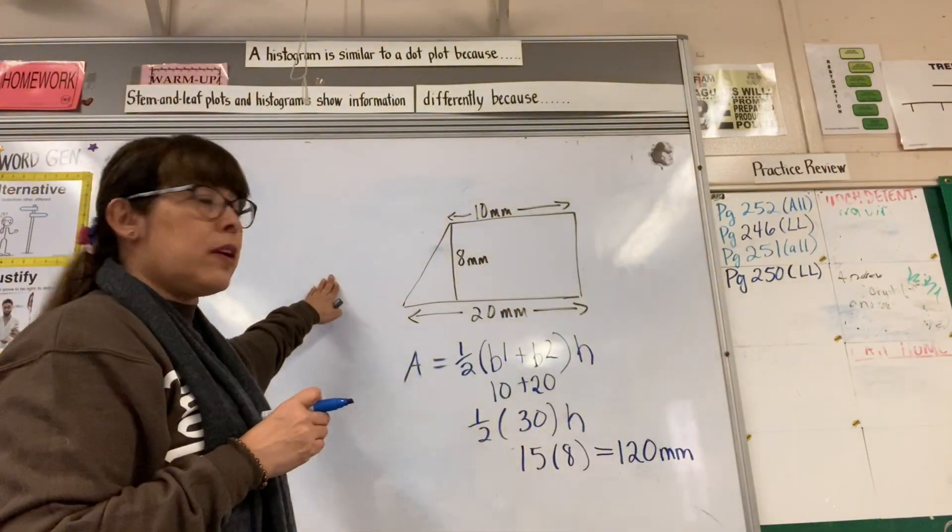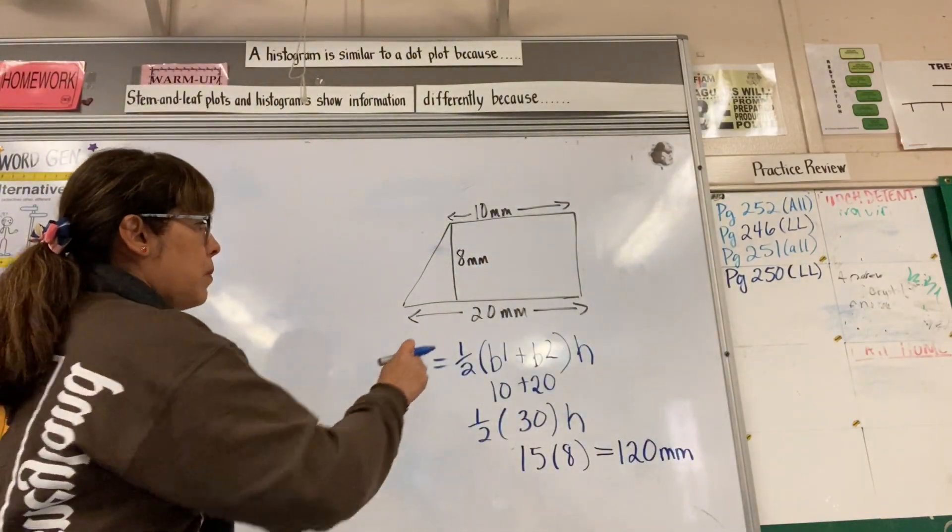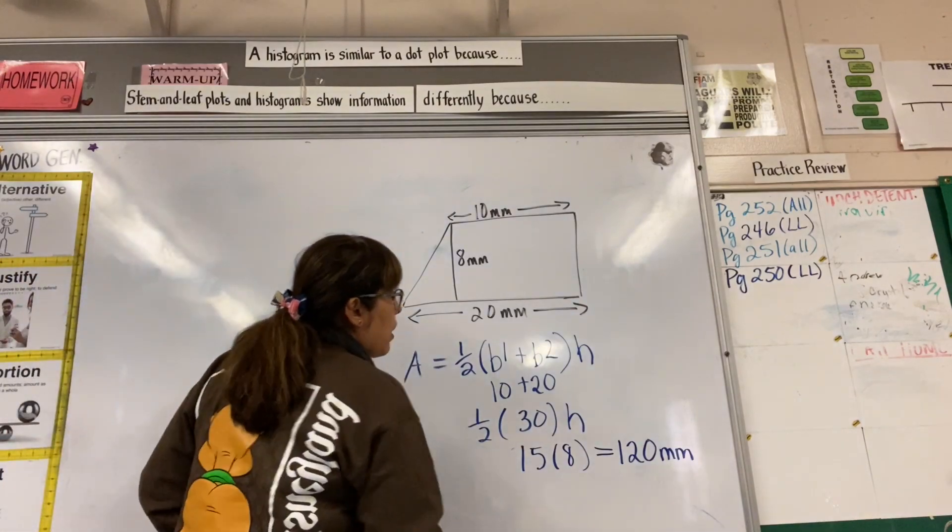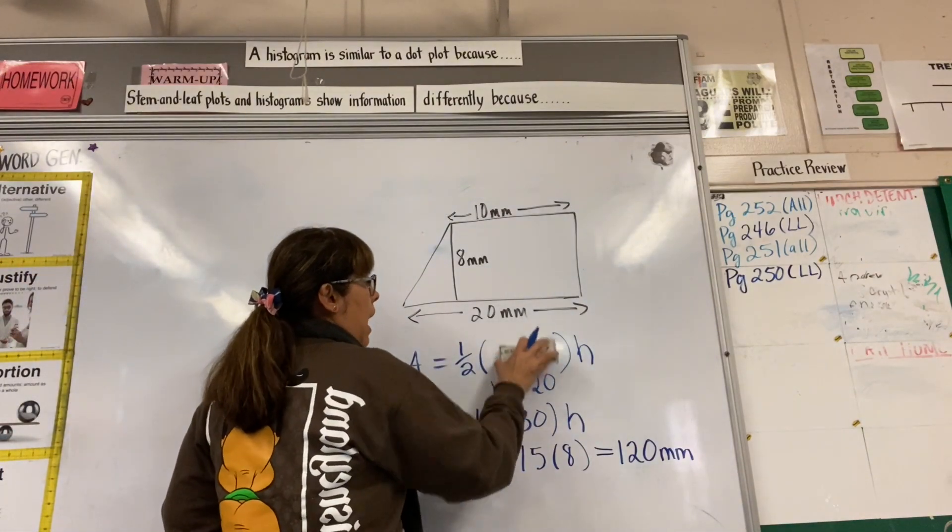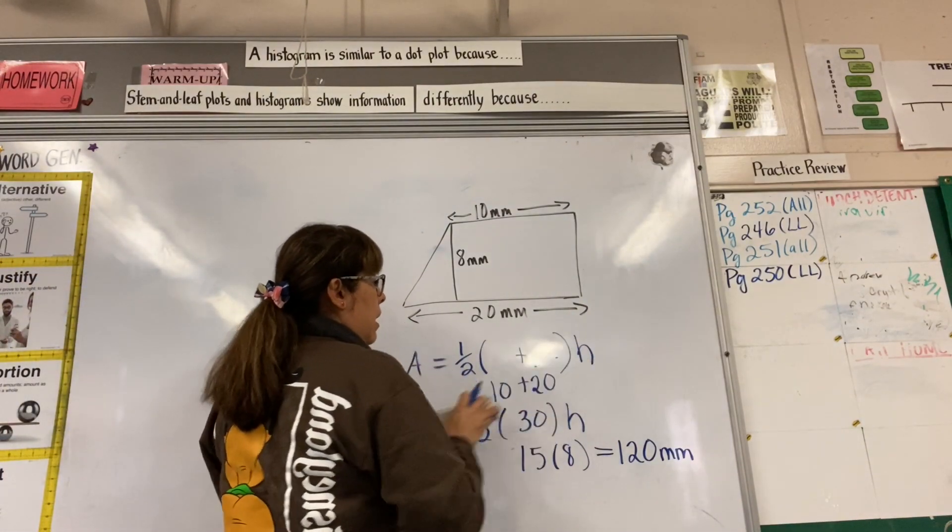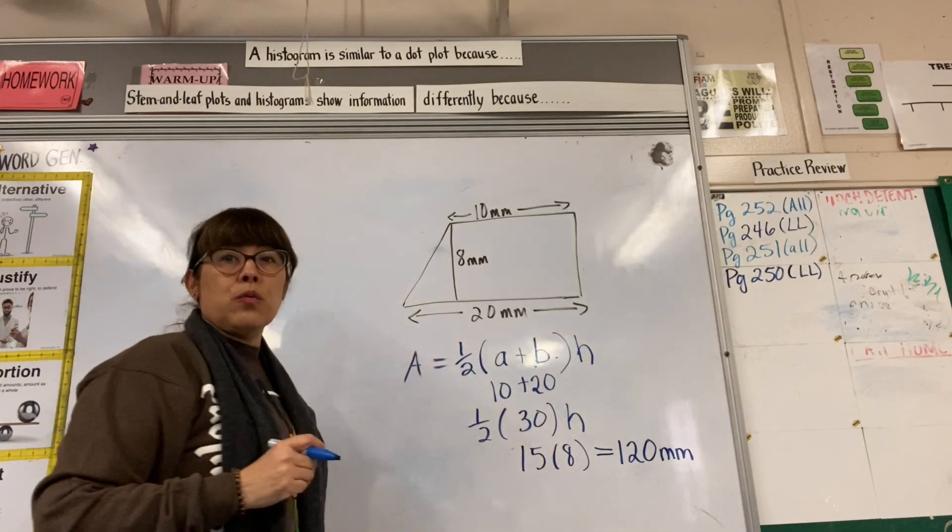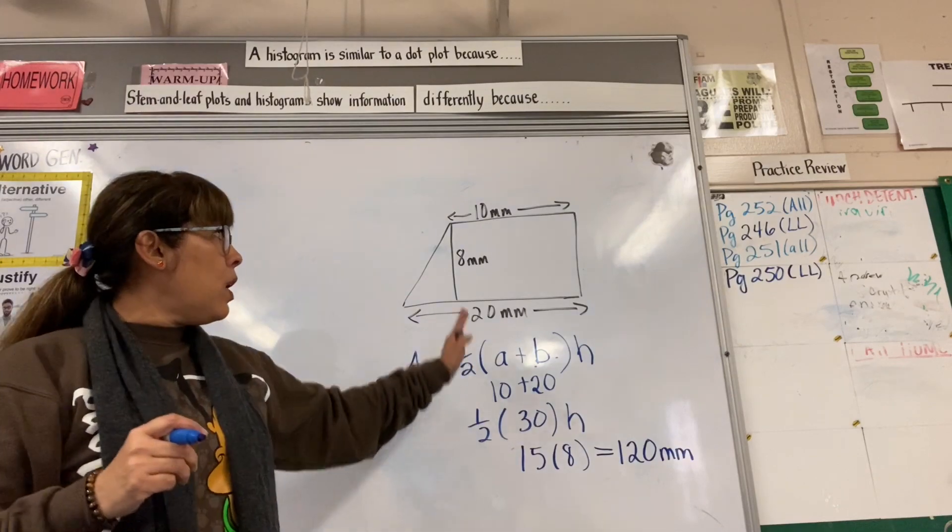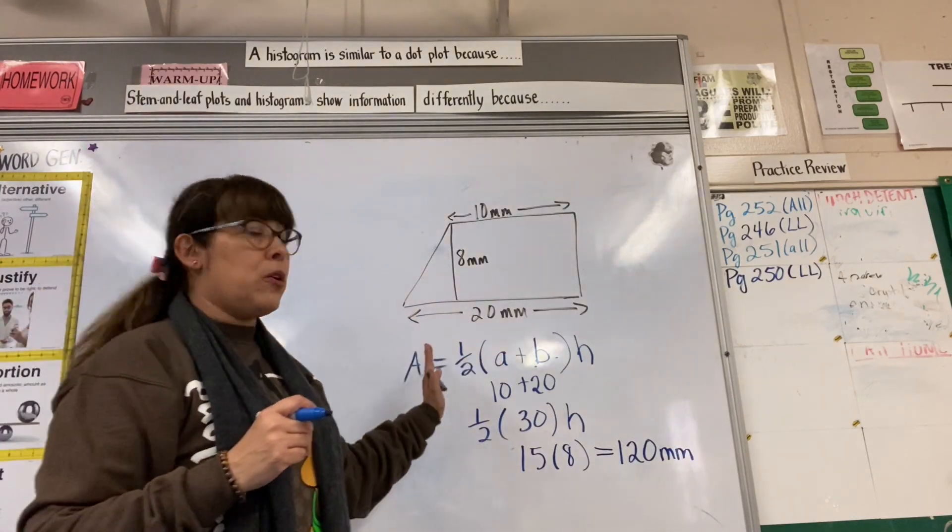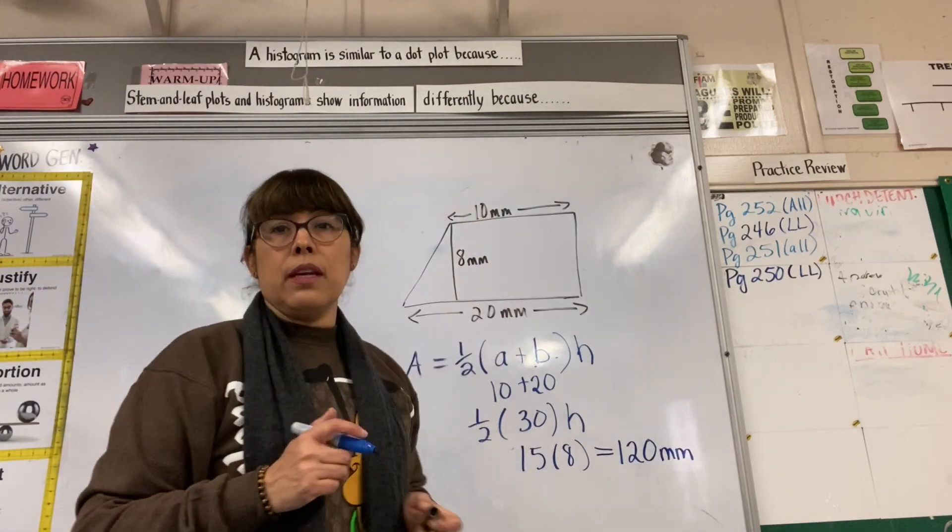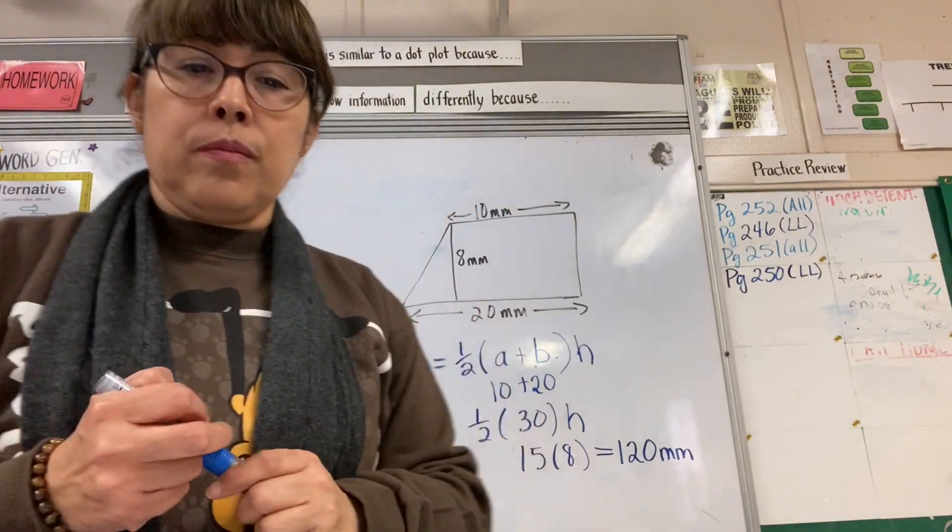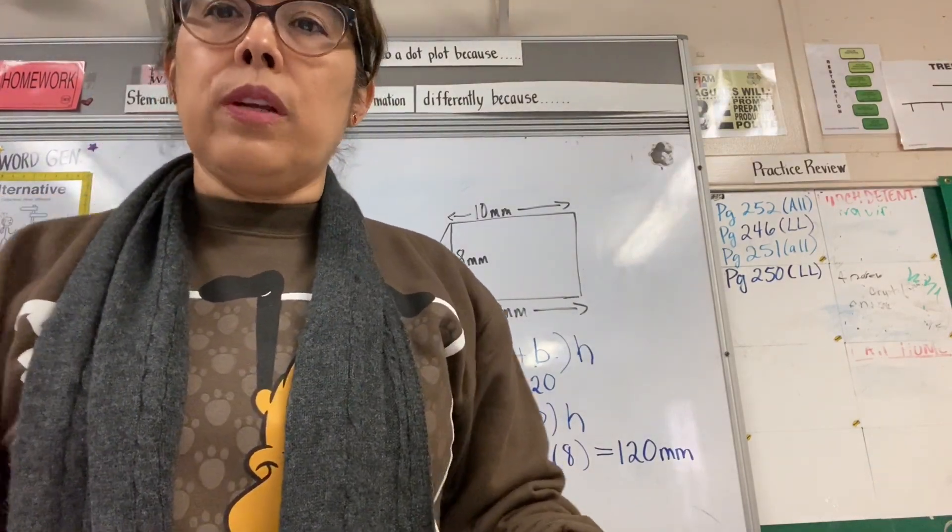In CPM, in our book, they tell us to use, instead of B1 and B2, they're calling the bases A and B. So whatever's easier for you guys to remember - base 1, base 2, or you could use A and B. It's the same thing. And that's how we solve the area of a trapezoid.